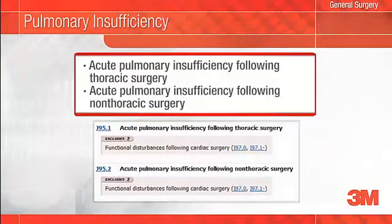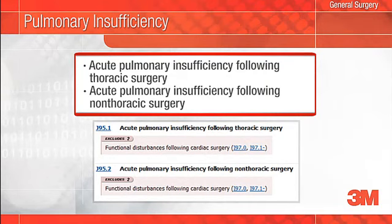When pulmonary insufficiency is due to surgery, documentation should describe a cause and effect relationship and it should be further described as acute or chronic. For example, acute pulmonary insufficiency due to surgery two days ago. One of the differences in ICD-10 is that pulmonary insufficiency due to surgery will be classified as either due to thoracic or non-thoracic surgery.